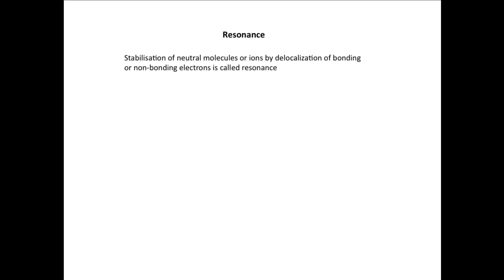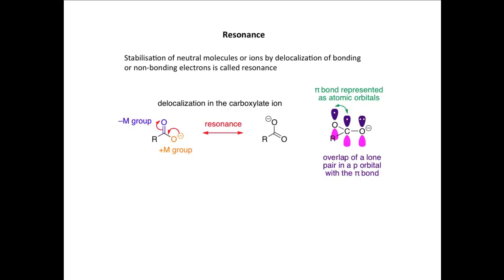Let's now have a look at a couple of examples. In the first example, we're looking at resonance of the carboxylate ion — specifically, delocalization of a lone pair of electrons on this oxygen onto the oxygen atom at the top. We can represent this delocalization using two double-headed curly arrows, which show the movement of electrons from an electron-donating group, a plus-M group, to this oxygen, which is an electron-withdrawing group, a minus-M group.